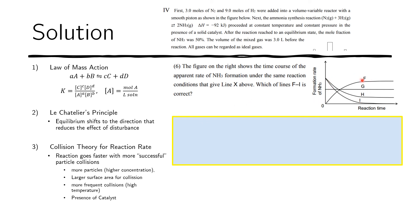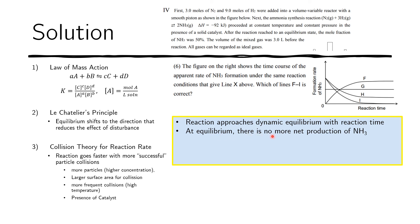Lastly, for question six, we want to know which curve correctly shows the reaction rate over time. The reaction approaches dynamic equilibrium, so the rate must eventually flatten. At equilibrium there is no more net production of product, meaning the apparent rate goes to zero. Therefore the correct curve is the one that decreases and reaches zero. If you learned something new today, please help my channel by clicking the subscribe button and the bell for notifications.